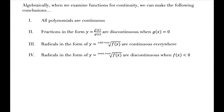If I have a function defined as a fraction of polynomials, that fraction will be discontinuous where the denominator equals 0, or where g of x equals 0. Radicals with an odd root — cube root, fifth root, etc. — are continuous everywhere since we can always take an odd root of any number. However, radicals with an even root — square root, fourth root, etc. — are discontinuous when the expression under the radical is less than 0. To find discontinuities, set that expression less than 0 and solve the inequality.